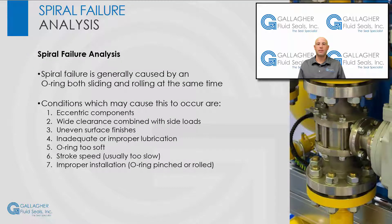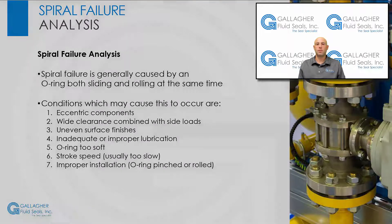Spiral failure is generally caused by an O-ring both sliding and rolling at the same time. Conditions which may cause this to occur are eccentric components, wide clearance combined with side loads, uneven surface finishes, inadequate or improper lubrication, the O-ring being too soft, stroke speed which is usually too slow, and improper installation such as the O-ring being pinched or rolled.